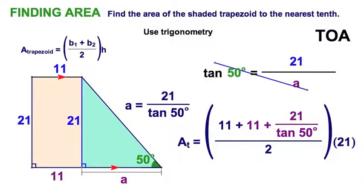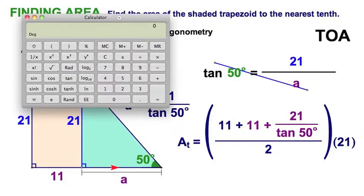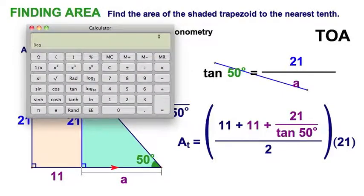Starting right here, 21 divided by, there's my 50, that's my tangent of 50, equals. So right now, that's the 21 divided by tangent of 50. I need to add 11, and 11 again, so I'll add 22. And then I'll take that number, divide by two.